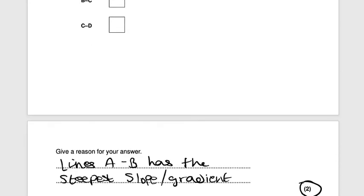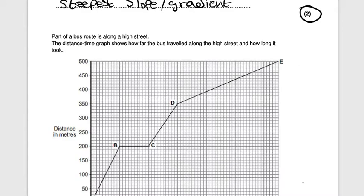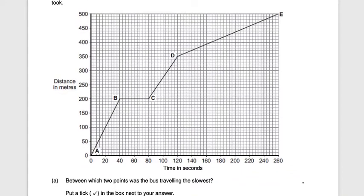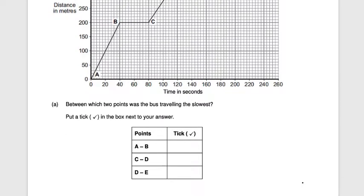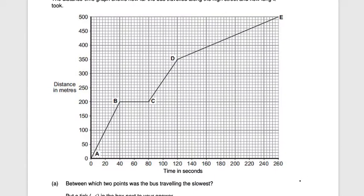Next question: part of a bus route is along a high street. The distance-time graph shows how far the bus traveled along the high street and how long it took. Between which two points was the bus traveling the slowest? You need to tick the correct answer: A to B, C to D, or D to E.